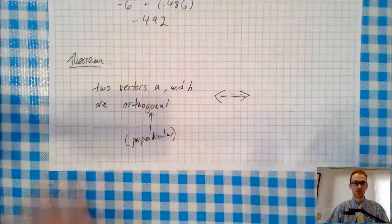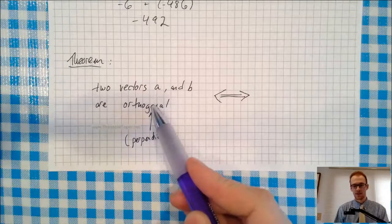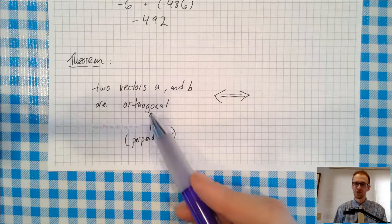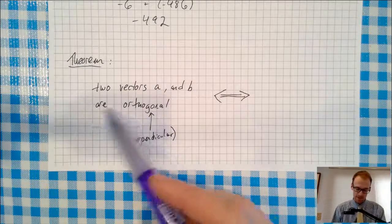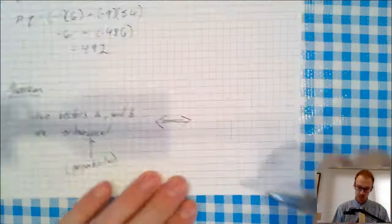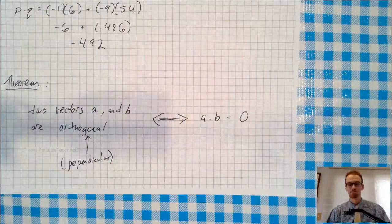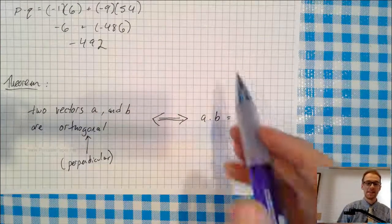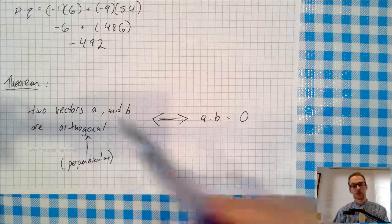I got this written down here as a theorem. You can add this to your notes if you want. Two vectors A and B are orthogonal. That's just a fancy word for perpendicular. Okay, now you know a new word. So you can sound even cooler when you talk about math stuff. Two vectors A and B are orthogonal if and only if their dot product equals 0. Okay, so if the dot product equals 0, then they're orthogonal. And if they're orthogonal, the dot product equals 0.